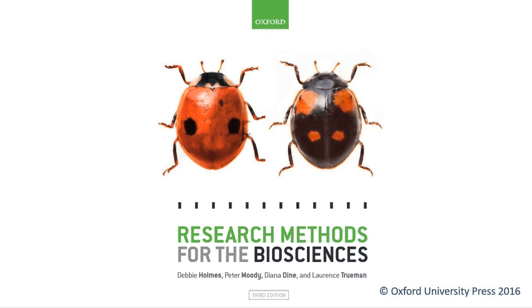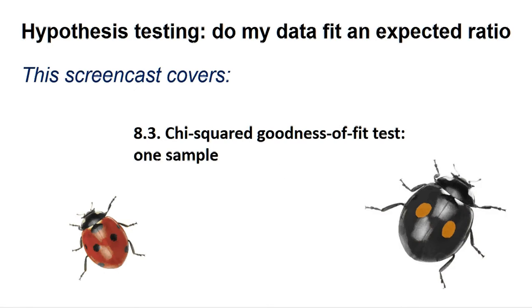Hello, welcome to another Research Methods for the Biosciences screencast for Microsoft Excel. This screencast covers section 8.3: chi-squared goodness-of-fit test for one sample.